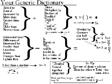Subtracted from, difference of, etc. translate to a minus sign, but if it says five less than a number you have to translate it in reverse.